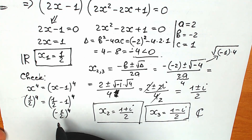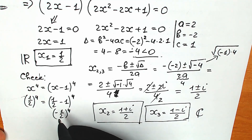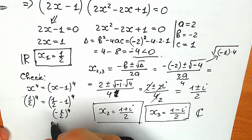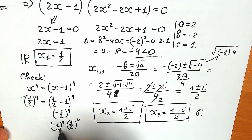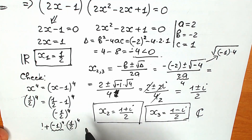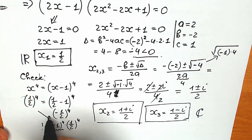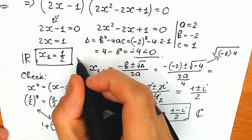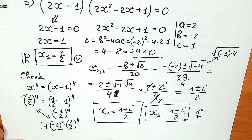Here's a quick proof: minus one half to the fourth equals minus 1 to the fourth times one half to the fourth. Since minus 1 to the fourth equals positive 1, the result is one half to the fourth — exactly the same as the left side. Our root is correct.